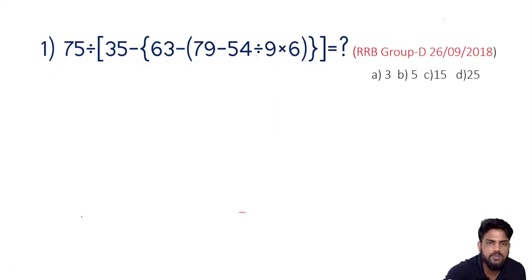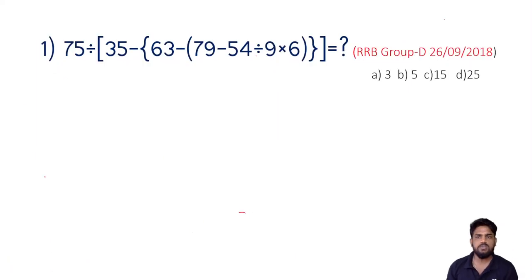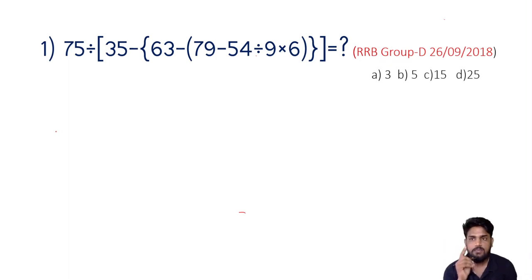So we will take the same questions. If we have known in railway, D group, RRB —